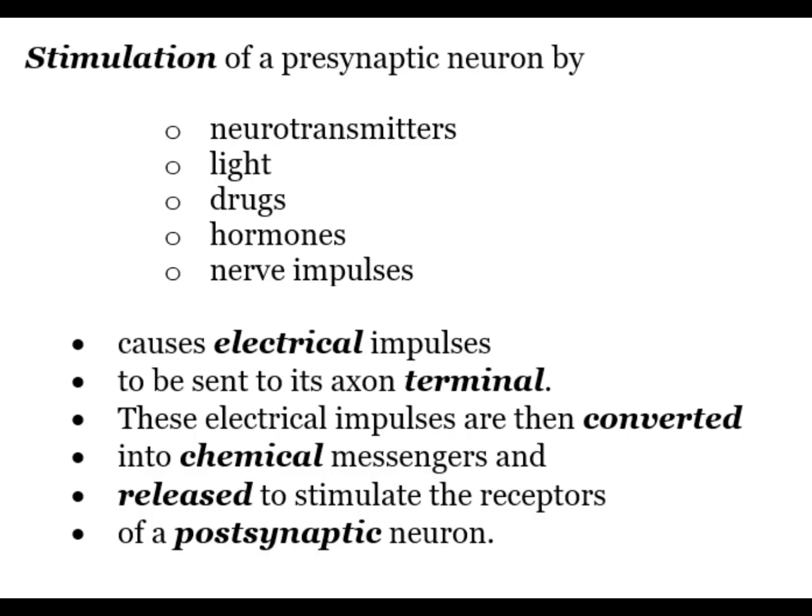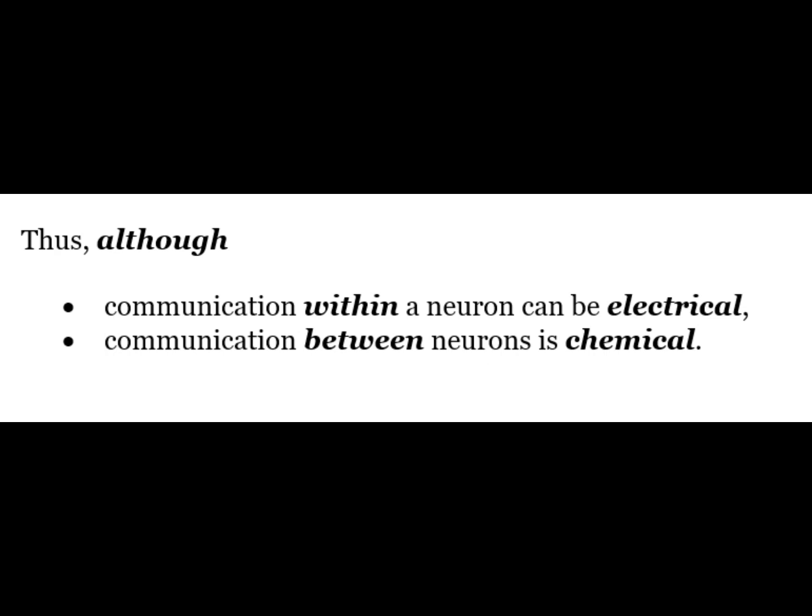In classic synaptic neurotransmission, stimulation of a presynaptic neuron by neurotransmitter, light, drugs, hormones or nerve impulses causes electrical impulses to be sent to its exon terminal. These electrical impulses are then converted into chemical messengers and released to stimulate the receptors of the postsynaptic neurons. Thus, although communication within a neuron can be electrical, communication between neurons is chemical.